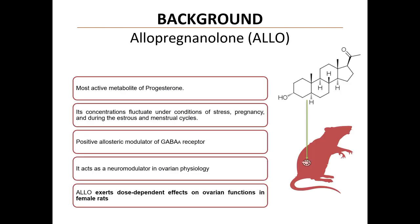Allopregnanolone is a neurosteroid. It is synthesized de novo in the brain from cholesterol or peripheral hormone precursors, and it is the most active metabolite of progesterone. Allo plays a major role in the central neuroendocrine control of reproductive functions and its concentrations in serum and brain areas vary throughout the estrus cycle. It is a positive allosteric modulator of the GABA-A receptor, and its direct action on ovarian tissue affects steroidogenesis and receptor expression, highlighting its role as a neuromodulator and regulator of ovarian physiology. It has been shown that Allo exerts dose-dependent effects on ovarian functions in female rats.